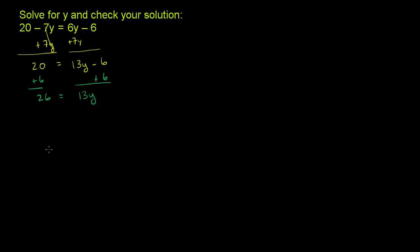So I get 26 is equal to 13y. I've isolated the y on the right-hand side, although it's being multiplied by 13. So if I just want a y on the right-hand side, or a 1y on the right-hand side, I can divide both sides by 13. Or the equivalent statement would be to multiply both sides by 1 over 13. Same thing. So let's divide both sides of this equation by 13.